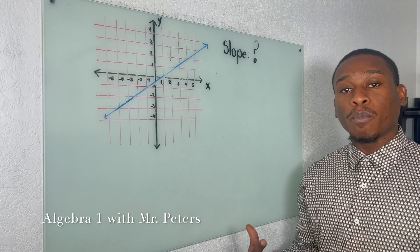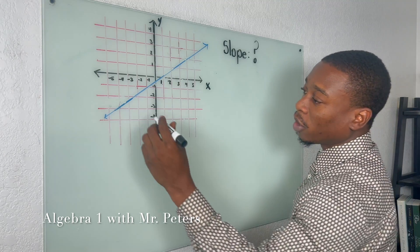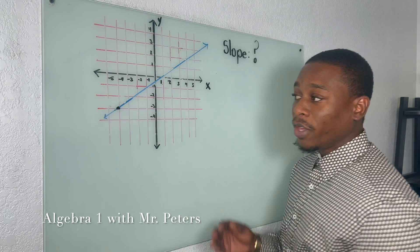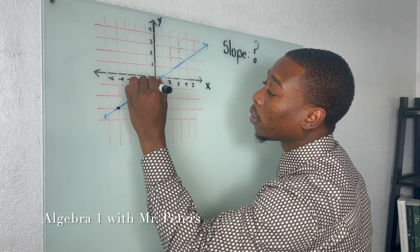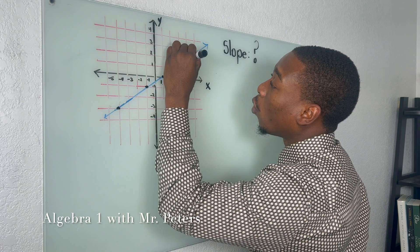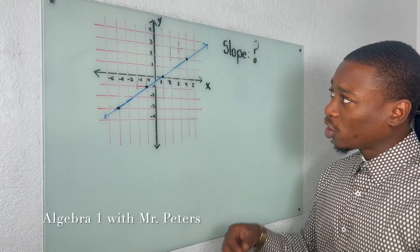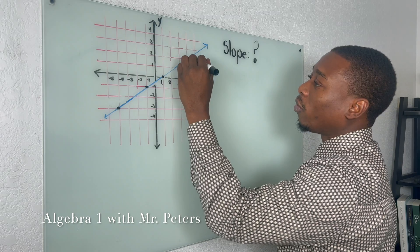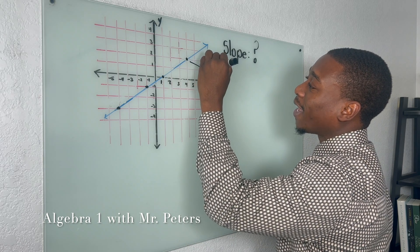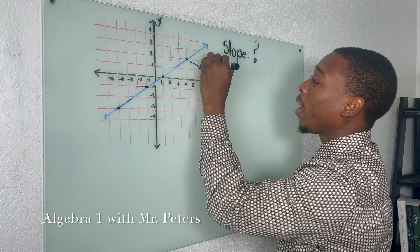So to begin guys, there's two things we need to understand. Number one is the points that we can use and the points we can't. When I go on my graph, we can use this point right here, this point, this point, or this point. And understand this is a rough sketch of a graph guys, so bear with me.